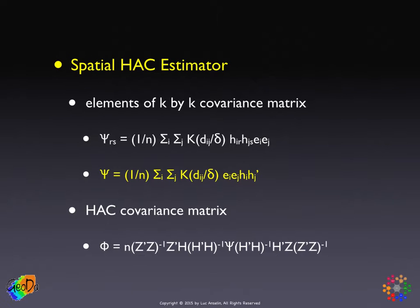The covariance matrix gets plugged into the middle of this expression. In the classic case, the matrix in the middle is H'H, which cancels out, leaving H'H inverse — the standard two-stage least squares result. Here, it is generalized with the HAC covariance matrix in the middle. Nothing changes to the estimates themselves; the only thing that changes is the standard errors.